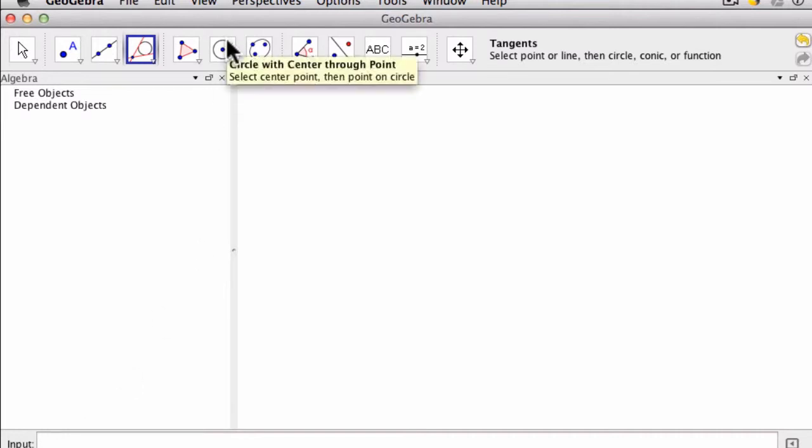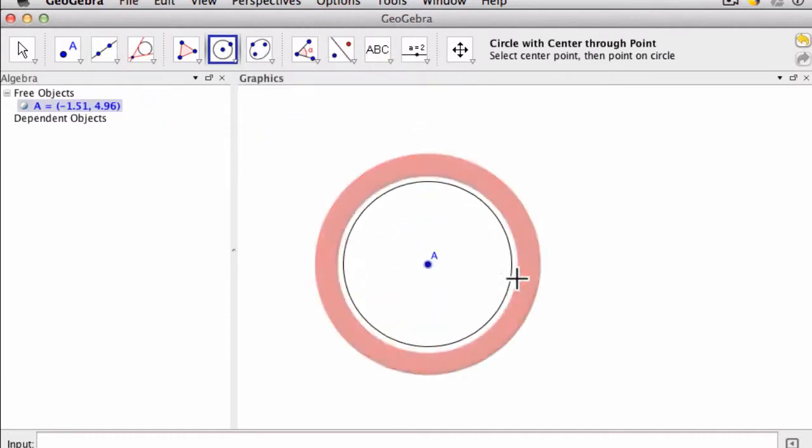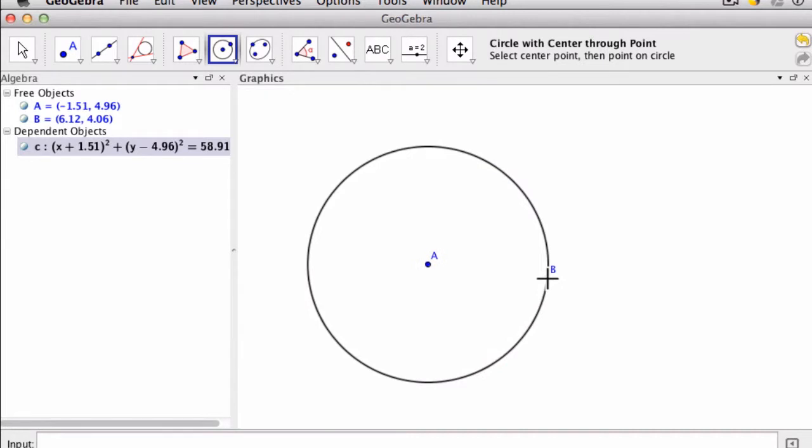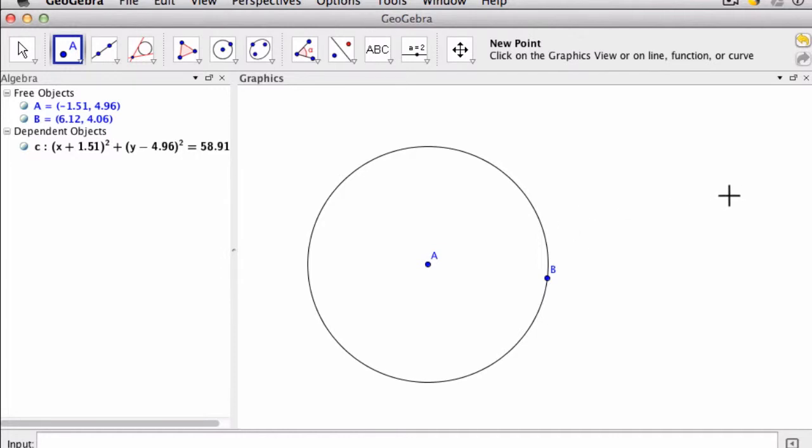So the first thing I would do is click my circle tool up here, create a circle with a center through a point, and then what I'm going to do is I'm going to pick some point outside of the circle somewhere. And if you're teaching this, of course, encourage students to pick points at different locations to see how that affects the tangent lines. So I'll just pick a point right here, and we'll call it point C.